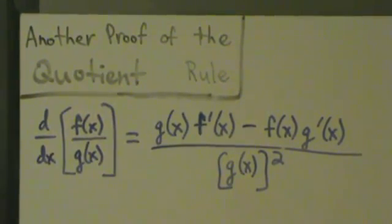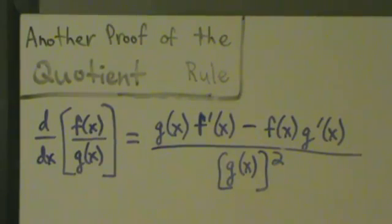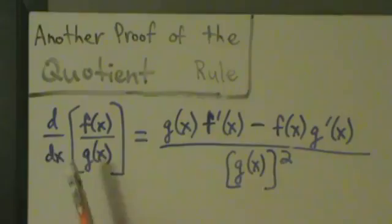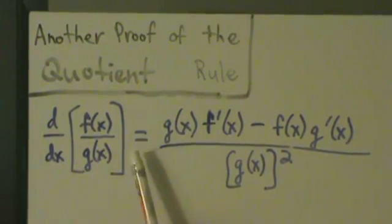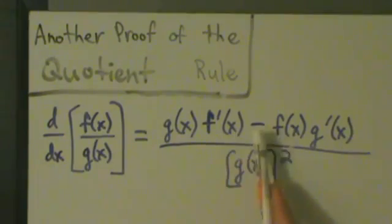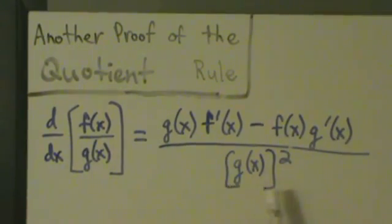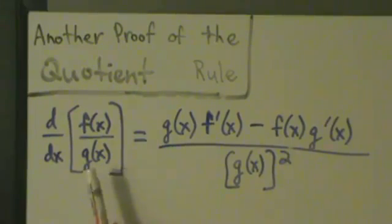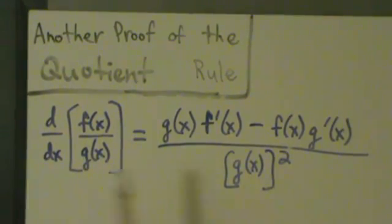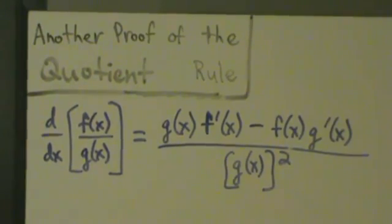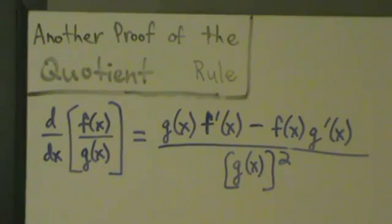Now that we talked about the chain rule, we can give another proof of the quotient rule. This proof uses the chain rule and the product rule, so it's good to see this because it's pretty much extra practice with the chain rule. Here's another proof of the quotient rule: remember, the quotient rule says d/dx of f(x) over g(x) equals bottom times derivative of the top, minus the top times derivative of the bottom, all over the bottom squared. We assume that the bottom is not zero.